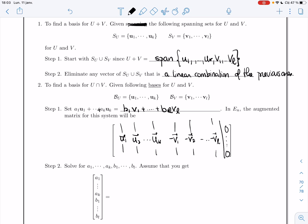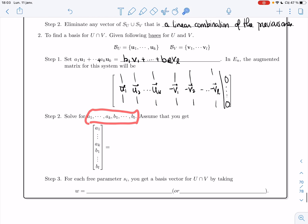Then you solve for a1, ..., ak and b1, ..., bl. You solve this linear system and write the solution in vector form. So let's assume that the solution we got has parameters s1, ..., sr. For one parameter, you have (α₁,₁, ..., αₖ,₁, β₁,₁, ..., βₗ,₁).